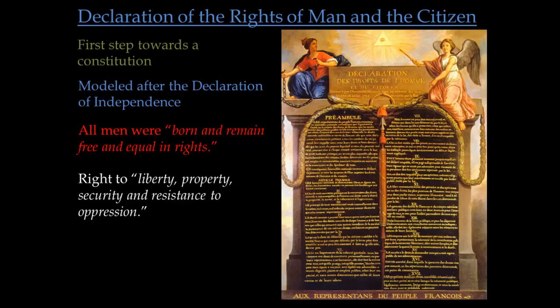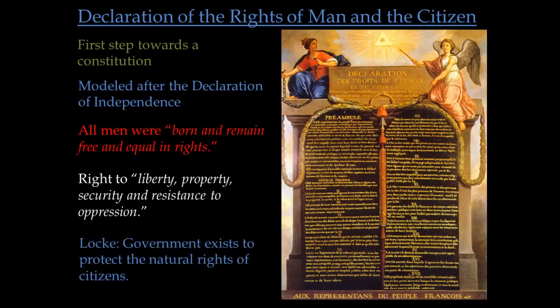If we think back to the start of this unit when we were talking about the Enlightenment and John Locke, the Declaration of the Rights of Man also proclaims that the government exists to protect the natural rights of citizens. They're really getting back to some of those Enlightenment ideas that had influenced the American Revolution and are now influencing the French Revolution.